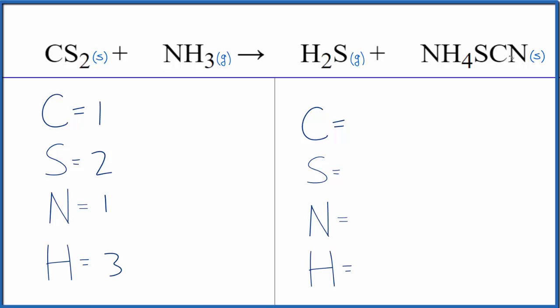On the product side we have just the one carbon over here. Sulfur we have one here and we have one here, so one plus one is two sulfur atoms. Make sure you count all of those.